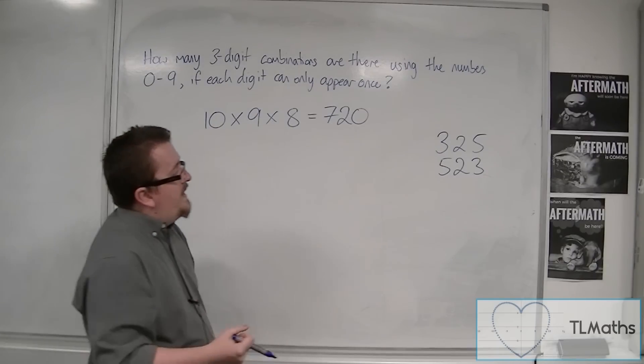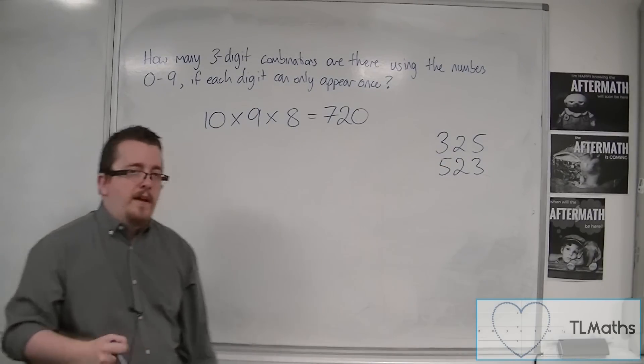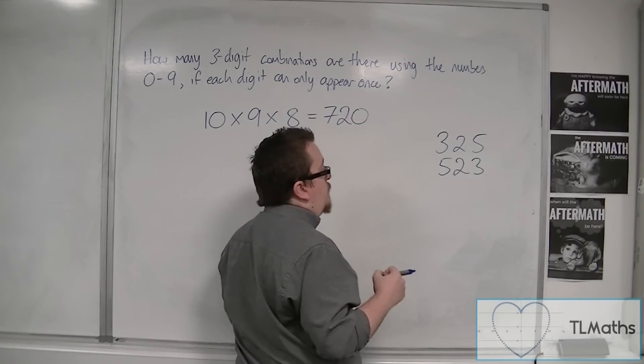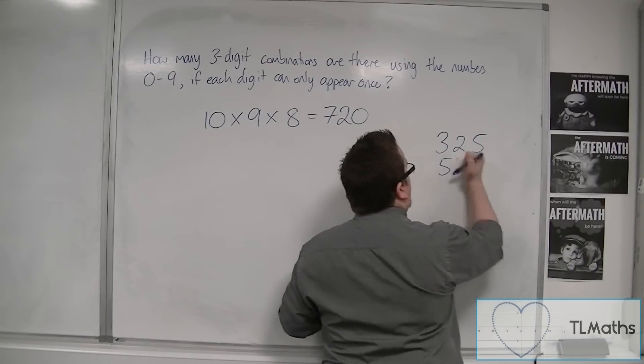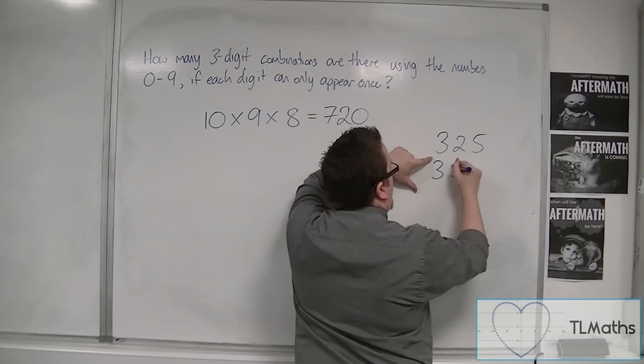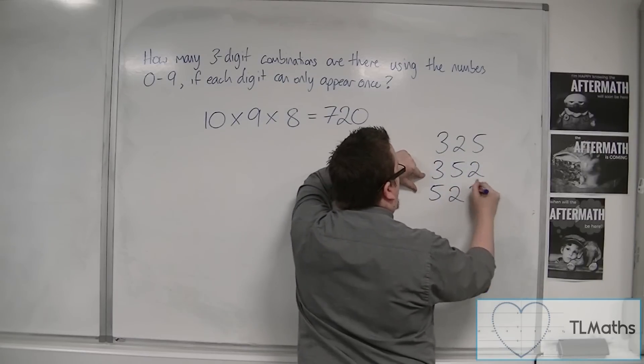So what we need to think about is how many different variations are there. So we have 3, 2, 5. We've got 5, 2, 3. Let's think of it straight from 3, 2, 5. So we'd have 3, 5, 2. We would have 5, 2, 3.